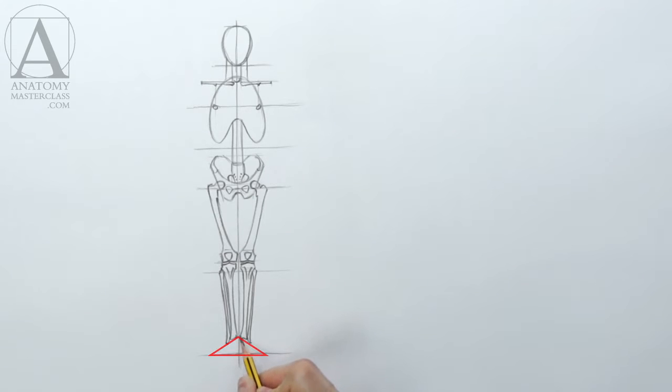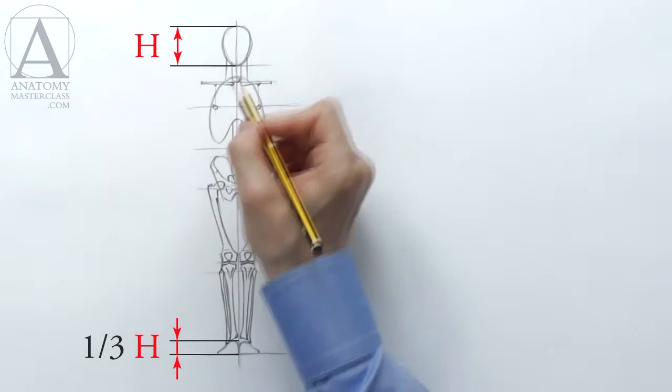I will schematically indicate two feet by drawing their outline. The height of the feet is equal to one-third of the head's height.